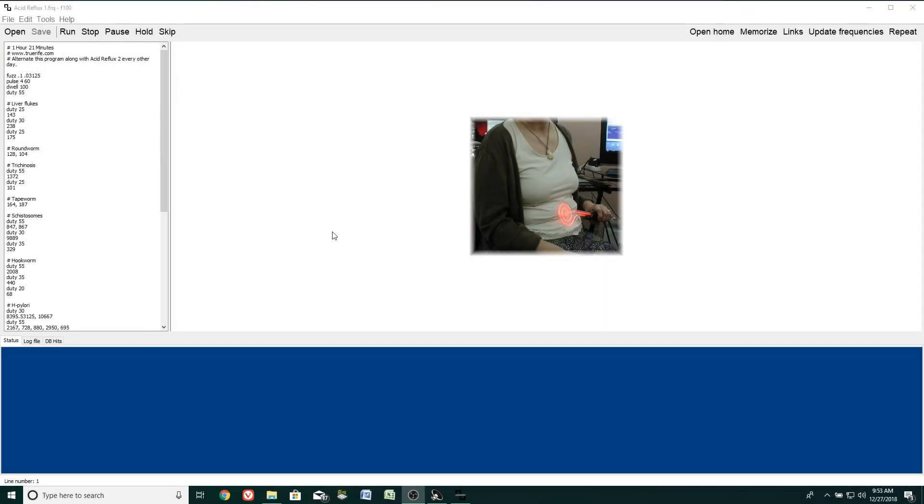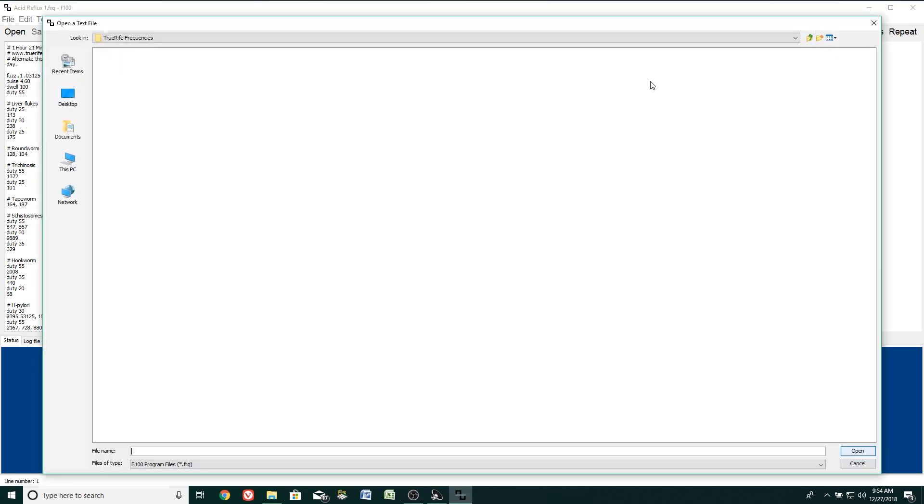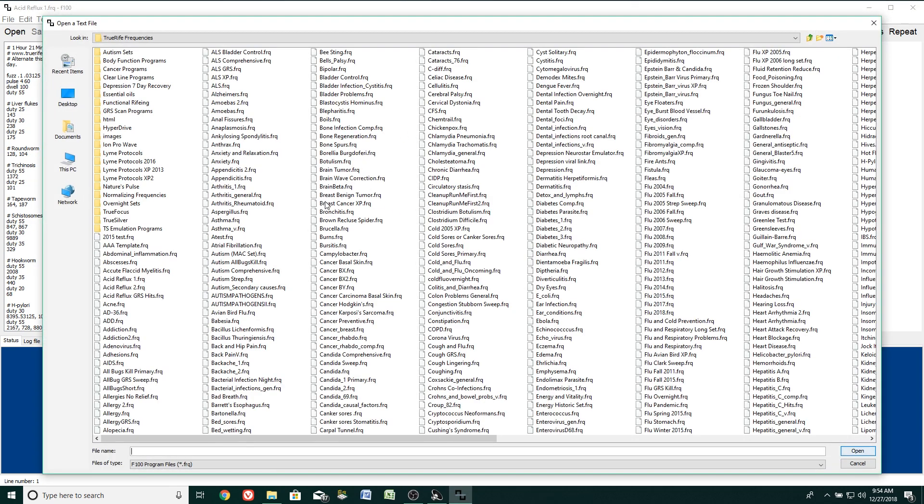This is a standard program that comes with our basic systems version 5. To get started, we click open home and we want to pick a program that we actually want to run through the F-122. In this case, I'll pick acid reflux 1.